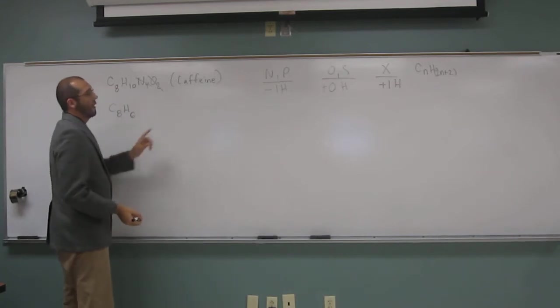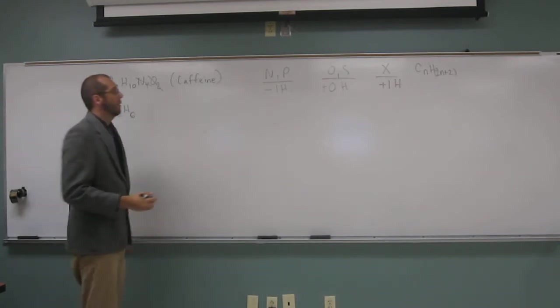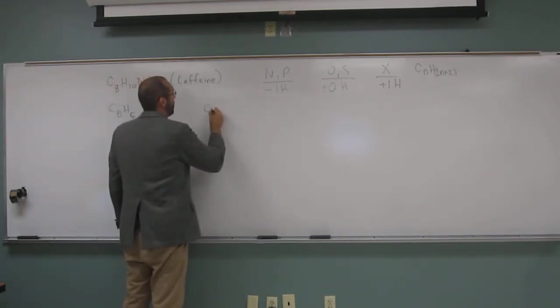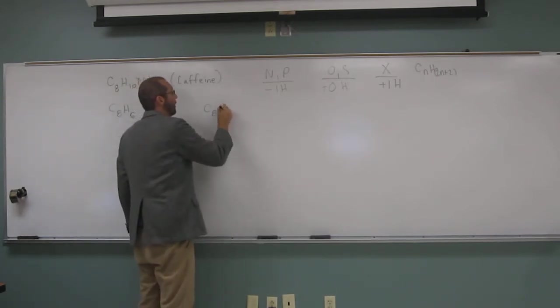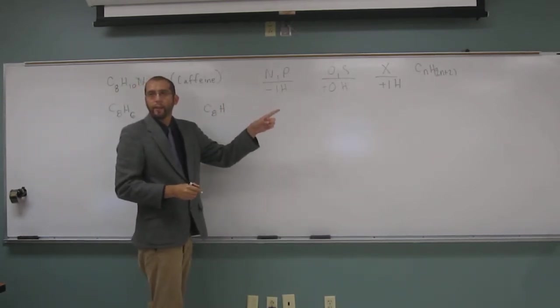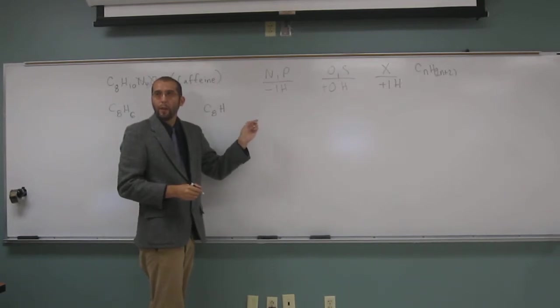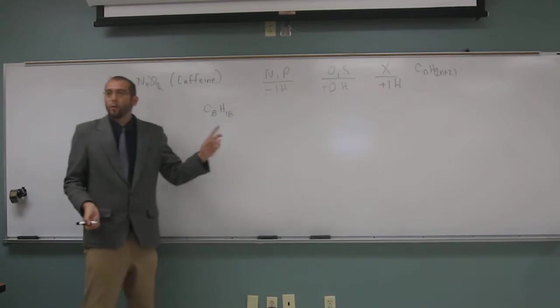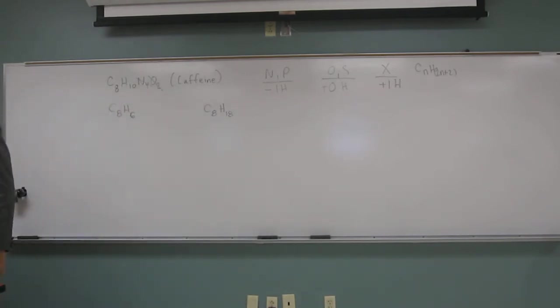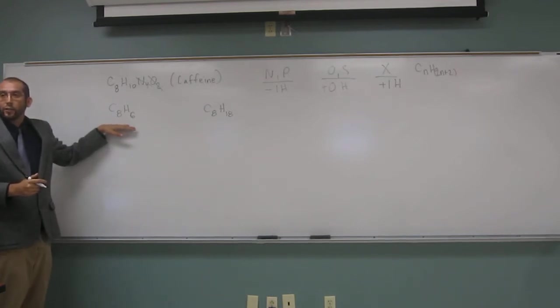So, CnH2N plus 2 tells us that if we have C8, right, we should have how many Hs? H2N, that's 16, right, plus 2 is 18. So, that should be our formula for the saturated hydrocarbon. But, in fact, we have C8H6.